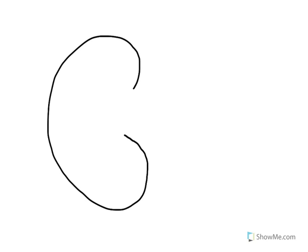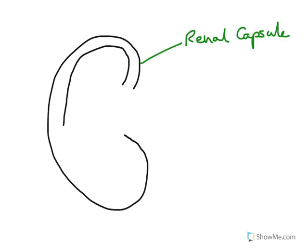What I've just drawn there is what's called the renal capsule. That's the renal capsule — that's just an outer layer, inside which you've got one of the two major regions of the inside of the kidney. The first inside layer is called the cortex, the renal cortex.